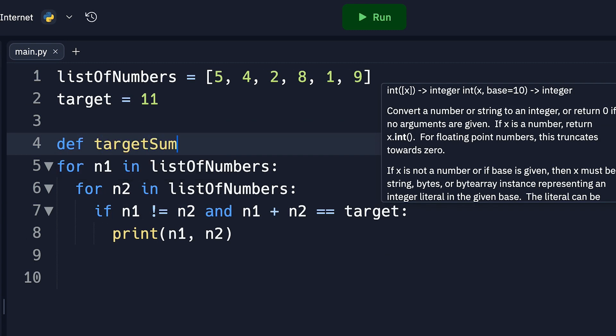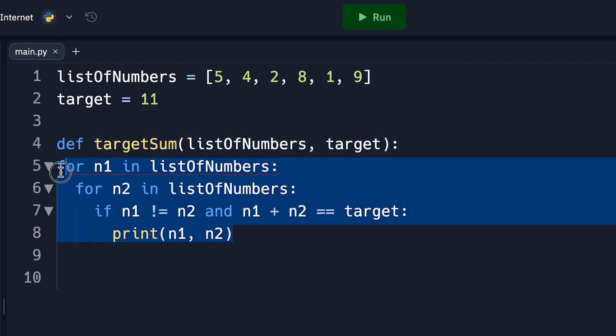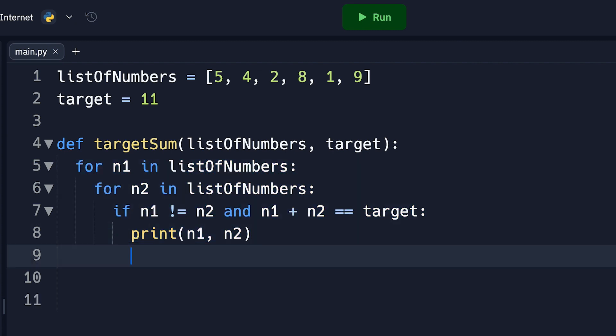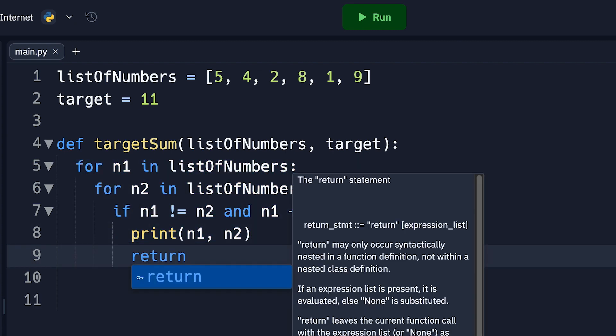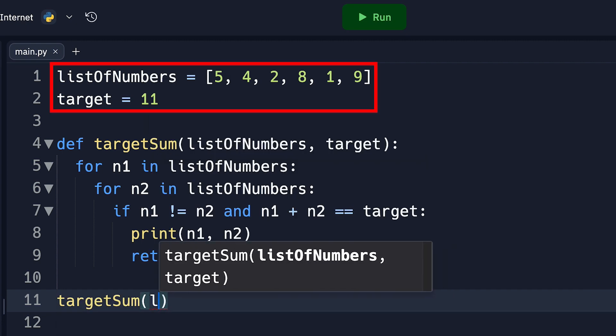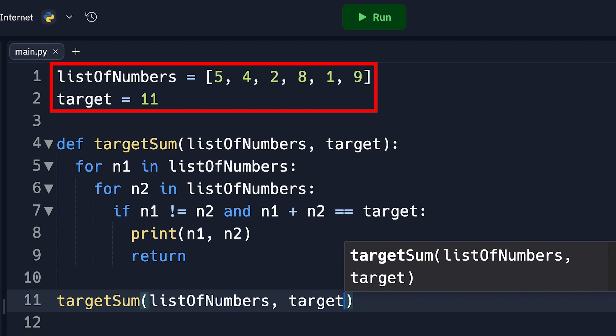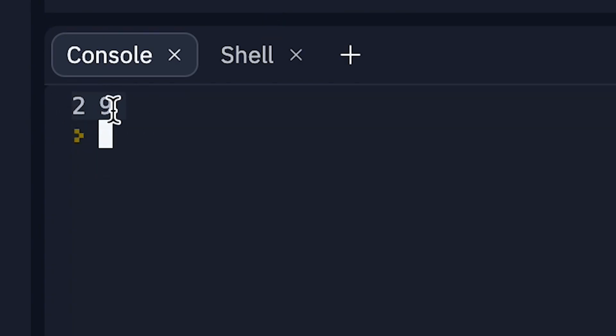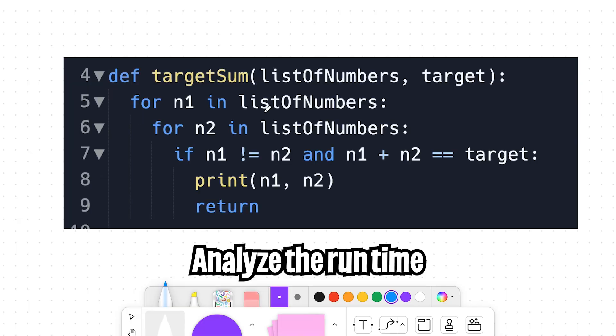So we can fix this very easily by wrapping the code inside a function so that we can exit early with a return statement. So let's do define target sum, and this will take two parameters, list of numbers and a target and put a colon. And now let's indent everything. And after we found the solution, we can just return early. And now let's call our function. So we can do target sum, brackets, list of numbers, and then here we can do target. And now let's click run. And as you can see, we got the solution once, 2 and 9. Cool.